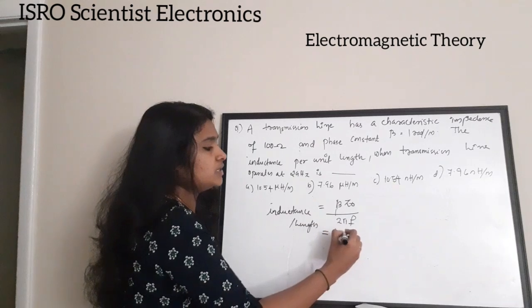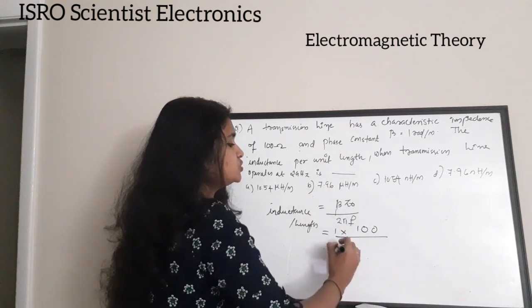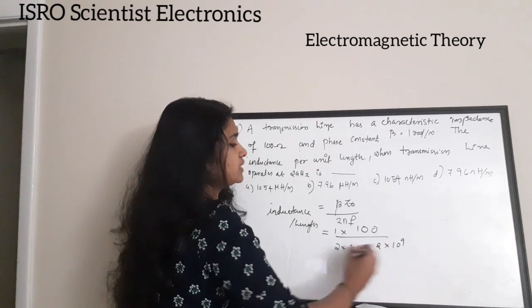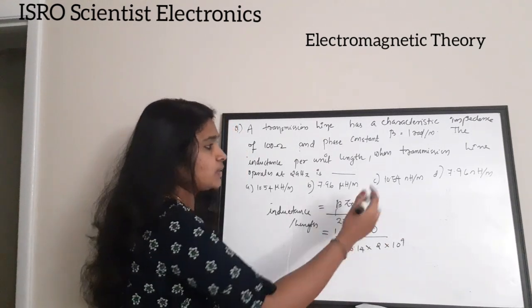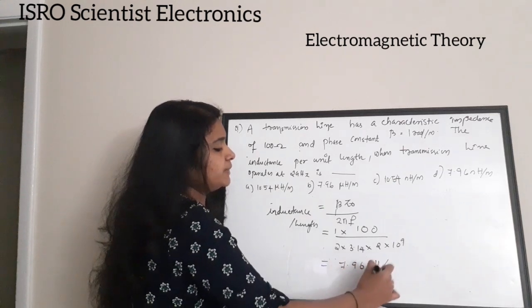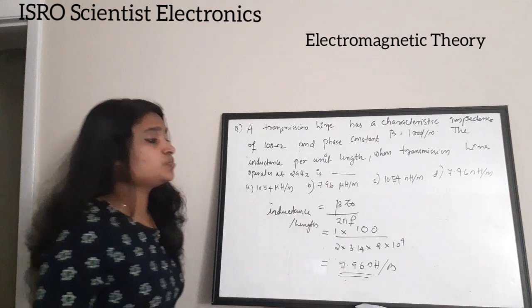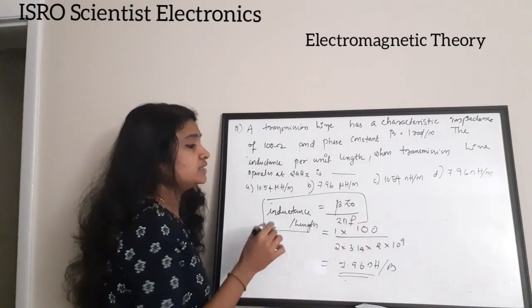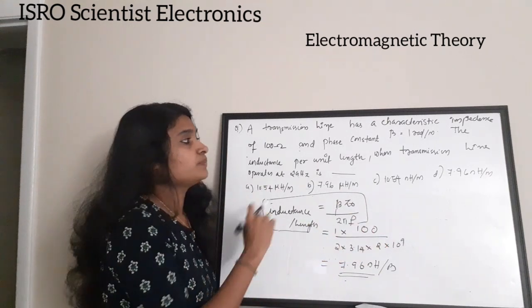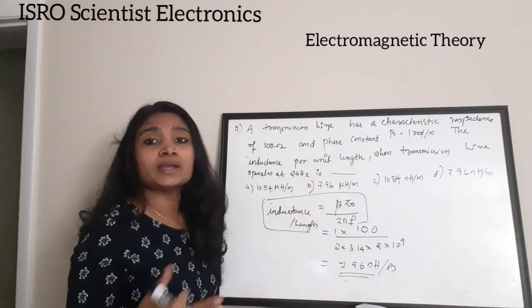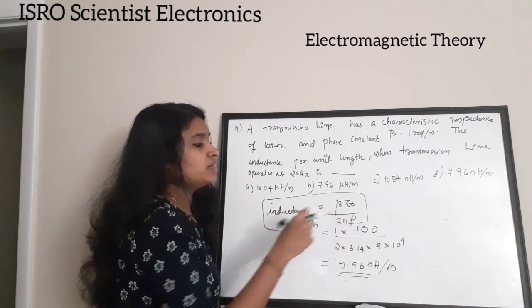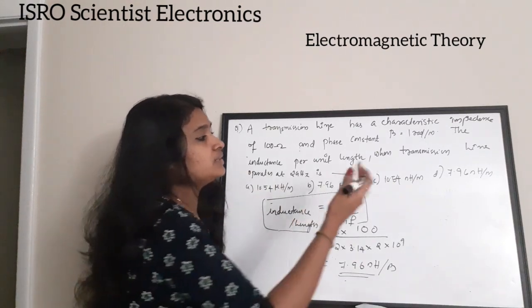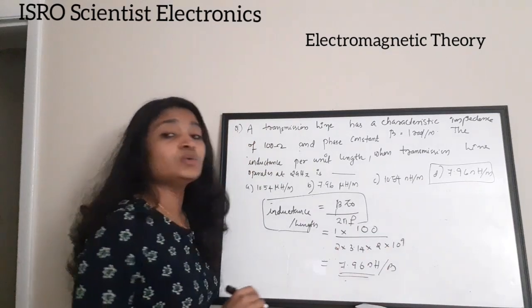Substituting values: β = 1, Z₀ = 100 ohms, f = 2 GHz = 2×10⁹ Hz. So L = 1 × 100 / (2π × 2×10⁹) = 7.96 nanohenry per meter. The correct answer is option D: 7.96 nH/m.